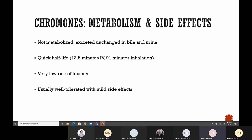Both cromolyn and nedocromil are not metabolized at all in the body. They're excreted completely unchanged in bile and urine. Cromolyn has a very quick half-life of only 13.5 minutes when given IV and 91 minutes via inhalation. Because of these reasons, chromones have very low risk of toxicity and are usually well tolerated with only mild side effects.